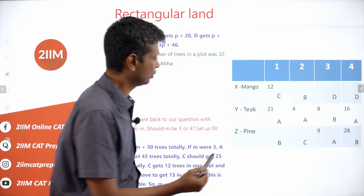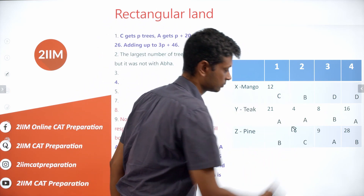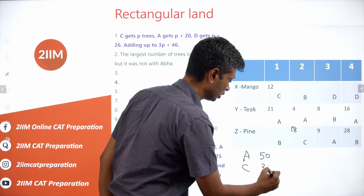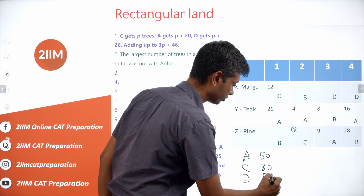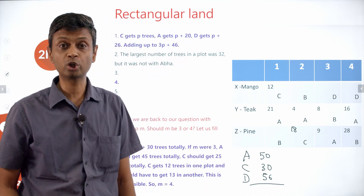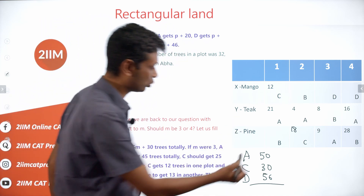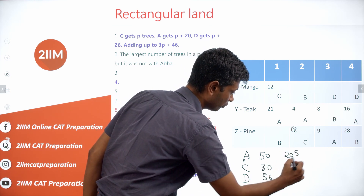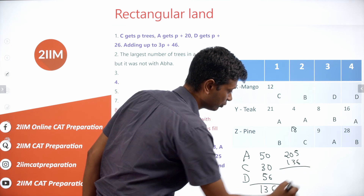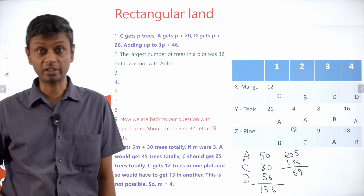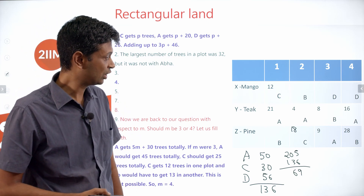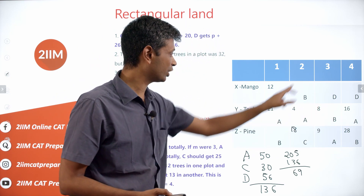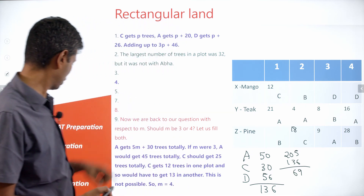With M equals 4, the teak column values become 4, 8, and 16. Chitra totals 30, so her second cell (pine row) must be 18. Now we have Ava totaling 50, Chitra totaling 30, and Deepti totaling 56 (P plus 26 equals 30 plus 26). Subtracting these three from 205 gives Bina a total of 69 trees.